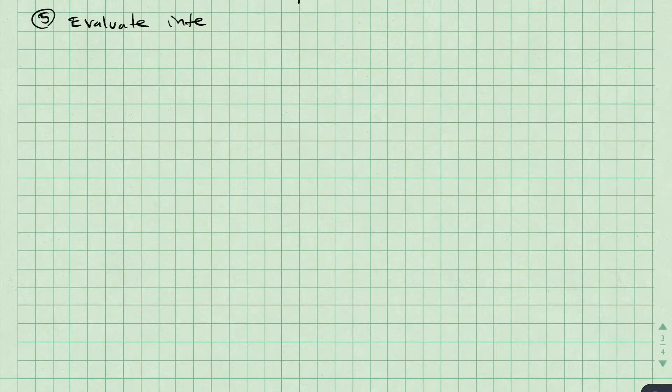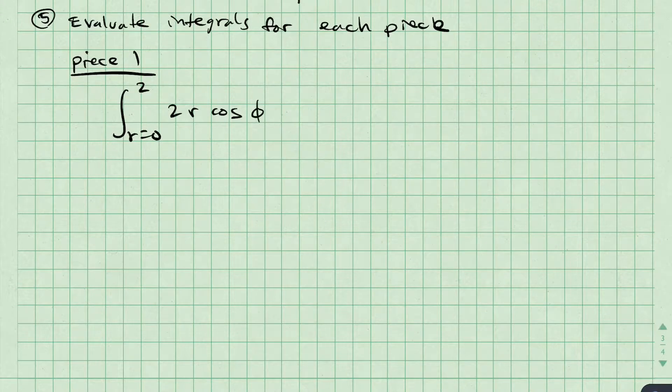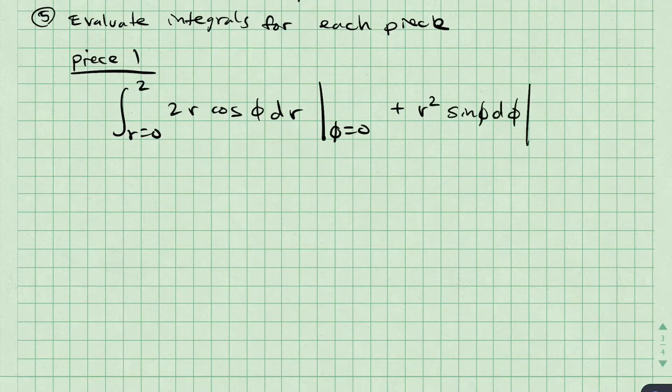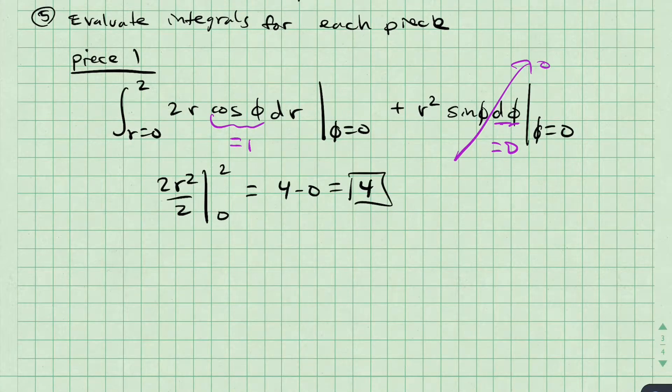Now, let's evaluate the integral for each piece. For section 1, I integrate over r equals 0 to 2, where phi is set to 0. Since phi does not change over this segment, d phi is equal to 0, and that part of the integral goes away. We are left with a fairly simple integral to get 4.